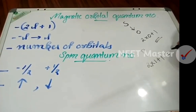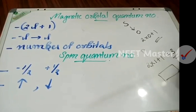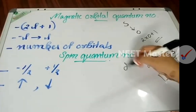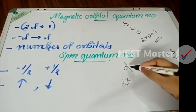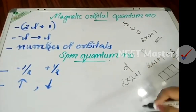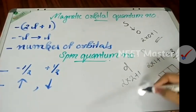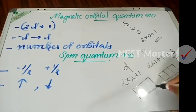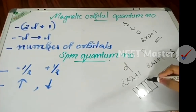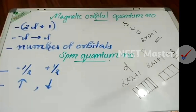For p orbital, 2(1)+1 = 3, so there are 3 p orbitals. For d orbital, 2(2)+1 = 5, so there are 5 d orbitals.